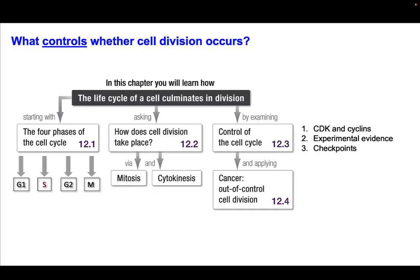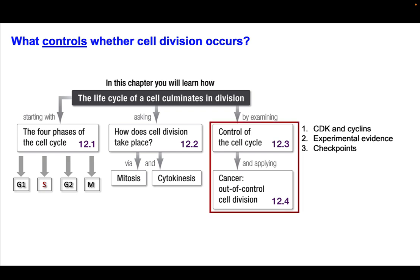In this second video for today, I'm going to be talking about control of the cell cycle. We just finished talking about mitosis and cytokinesis, and now we're going to talk about how these processes are controlled during cell division and what controls whether or not cell division occurs. I'll present this lecture in a slightly different format than the textbook: first, CDKs and cyclins, then the experimental evidence, and finally checkpoints and cancer.